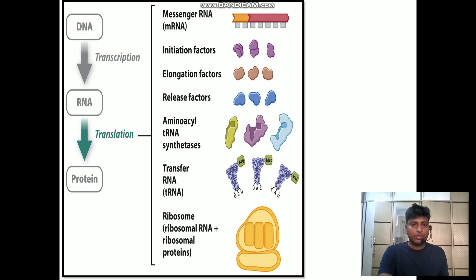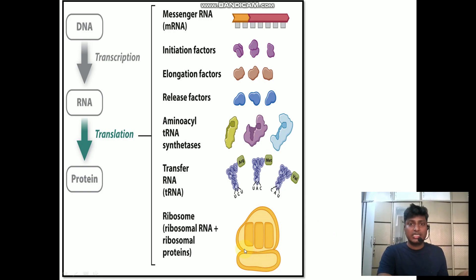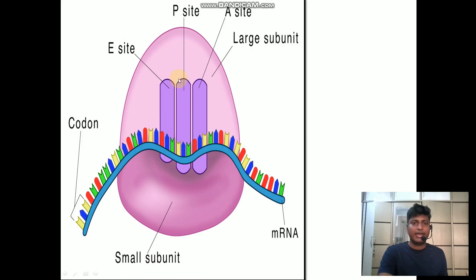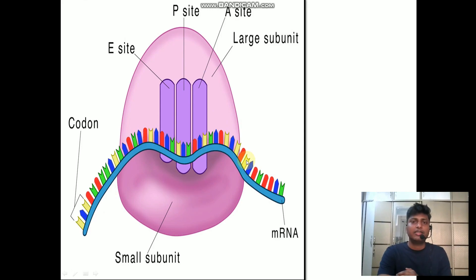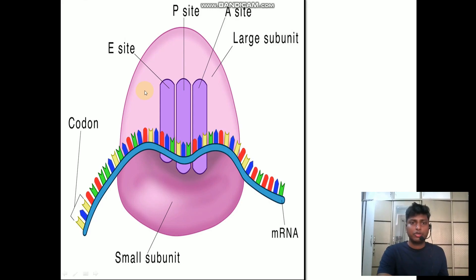We also require ribosomes, which are very important for translation because the ribosomes are going to move on the mRNA. Ribosomes are made up of two subunits: the large subunit and the small subunit. Inside the ribosome there is also an RNA — ribosomal RNA. Ribosomal RNA helps the mRNA to bind to the ribosome. As we can see on the screen, the mRNA is sitting inside the ribosome, and during translation the ribosomes move along the mRNA.